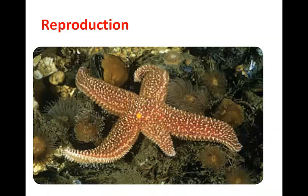Most echinoderms reproduce sexually — females shed eggs and males shed sperm in the water where fertilization takes place. The fertilized eggs develop into free-living larvae with bilateral symmetry, which eventually develop into adults with radial symmetry. Many echinoderms have the ability to drop off an arm when attacked, and others can expel parts of their internal organ systems when threatened. All of these body parts can be regenerated.